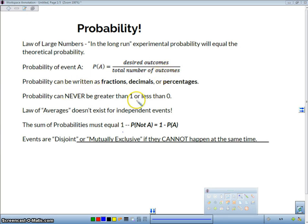Probability can either be written as fractions, decimals, or percentages. It can never be less than zero or greater than one. It could be zero or one, but it can't be less than that. And on top of that, the sum of the probabilities must be equal to one.